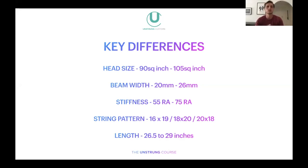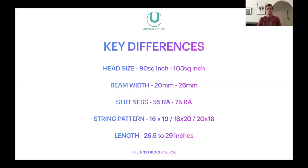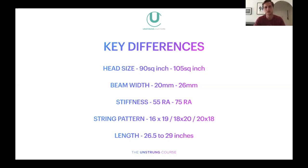The first super popular 100 square inch racket was the Pure Drive — which is still around and popular today. With regards to head size: the smaller the head size, the more control you have, but a smaller sweet spot and less power from the frame. Vice versa, the bigger the head size, the bigger the sweet spot and more power, but at a slight loss of control. That's generally why the happy medium is between 97–100 square inches. It comes down to whether you prefer more control or more power.